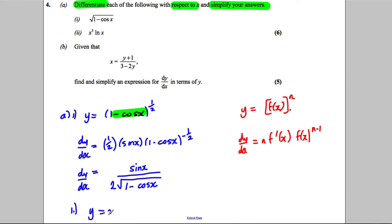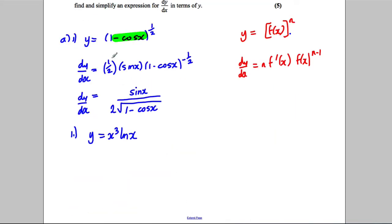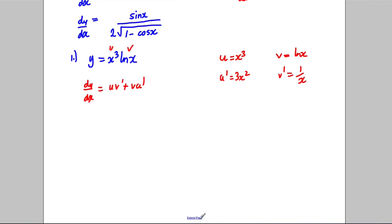Part 2: The function is y equals x cubed times the natural logarithm of x. You should spot we've got a product here, u times v, where u equals x cubed so u' is 3x squared, and v equals ln x so v' is 1 over x. The product rule says dy/dx equals uv' plus vu'.